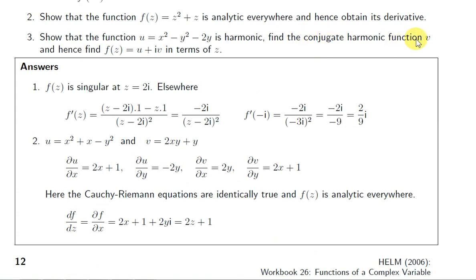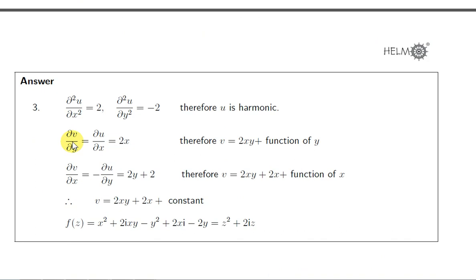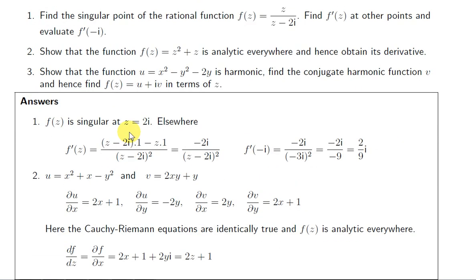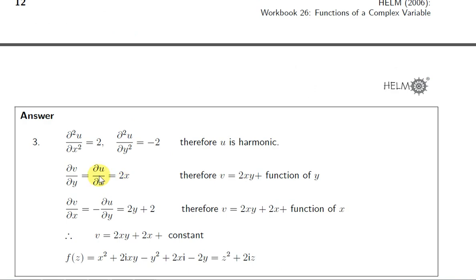Next, we want to find the conjugate harmonic function v. The conjugate harmonic function v has the property that f(z) = u + iv is analytic. If f is analytic, u and v must satisfy the Cauchy-Riemann equations. From the first Cauchy-Riemann equation, ∂v/∂y = ∂u/∂x. We found ∂u/∂x = 2x, so ∂v/∂y must also equal 2x.